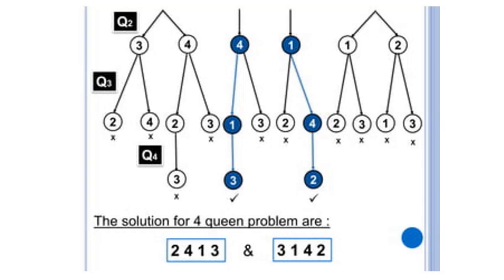So we try Queen 2 in column 4 instead. Queen 1 does not attack Queen 2 there. Now for Queen 3, columns 1 and 4 are occupied, leaving columns 2 and 3. Placing Queen 3 in column 3 — Queen 2 attacks it. Placing Queen 3 in column 2, Queen 4 has only column 3 left, but Queen 3 attacks Queen 4 there. So we backtrack — placing Queen 1 in column 1 yields no valid solution.